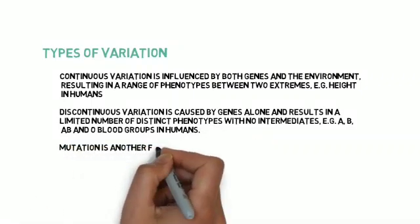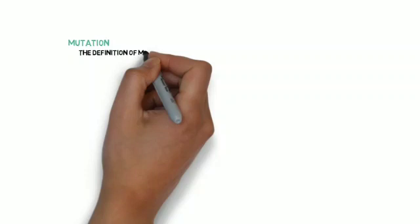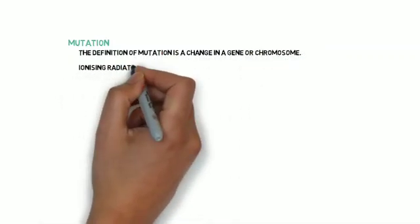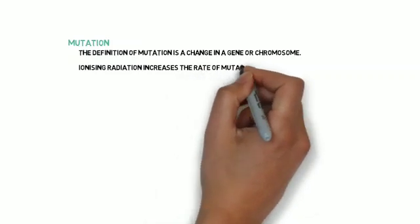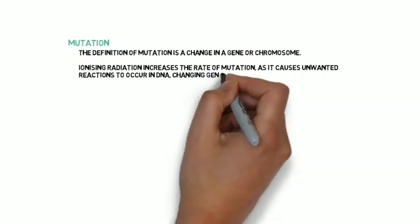Mutation is another form of variation. The definition of mutation is a change in a gene or chromosome. Ionizing radiation increases the rate of mutation as it causes unwanted reactions to occur in DNA, changing genes.